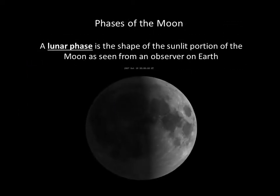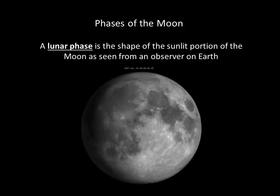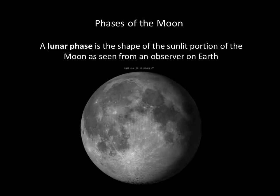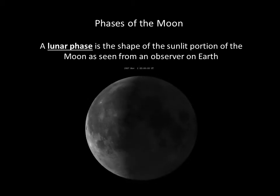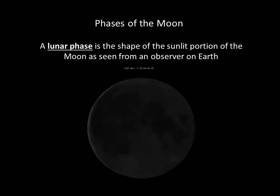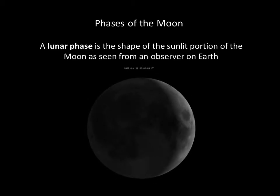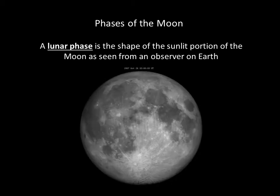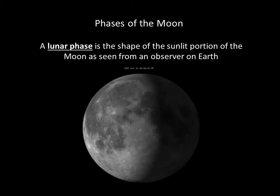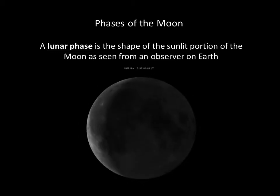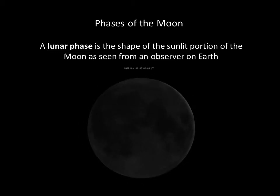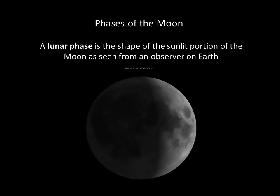A lunar phase, by definition, is the shape of the sunlit portion of the Moon as seen from an observer on Earth. We'll go through each of the lunar phases next.